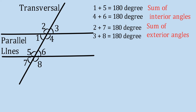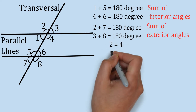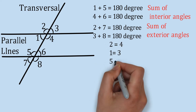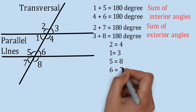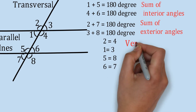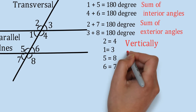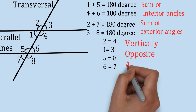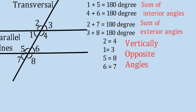Angle 2 is equal to angle 4, angle 1 equals angle 3, angle 5 equals angle 8, and angle 6 equals angle 7. Why? Because these are the vertically opposite angles. The vertically opposite angles are equal to each other.